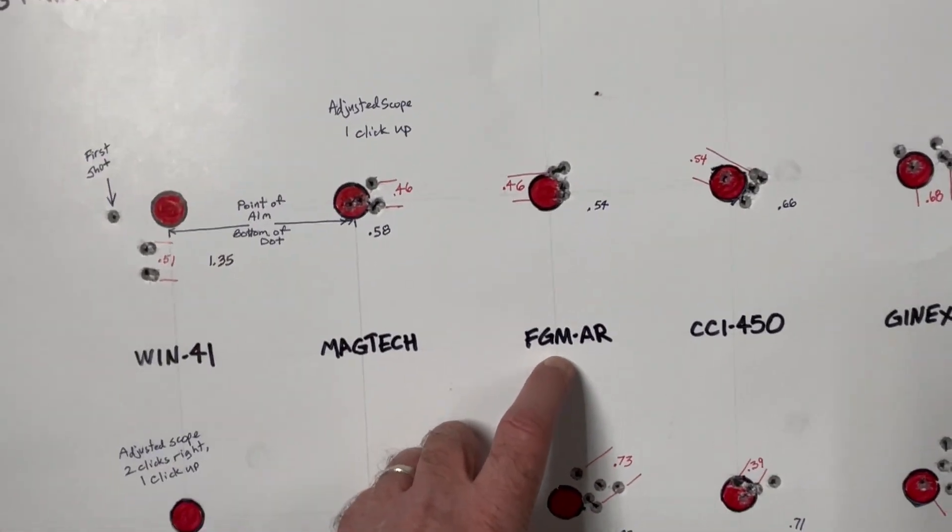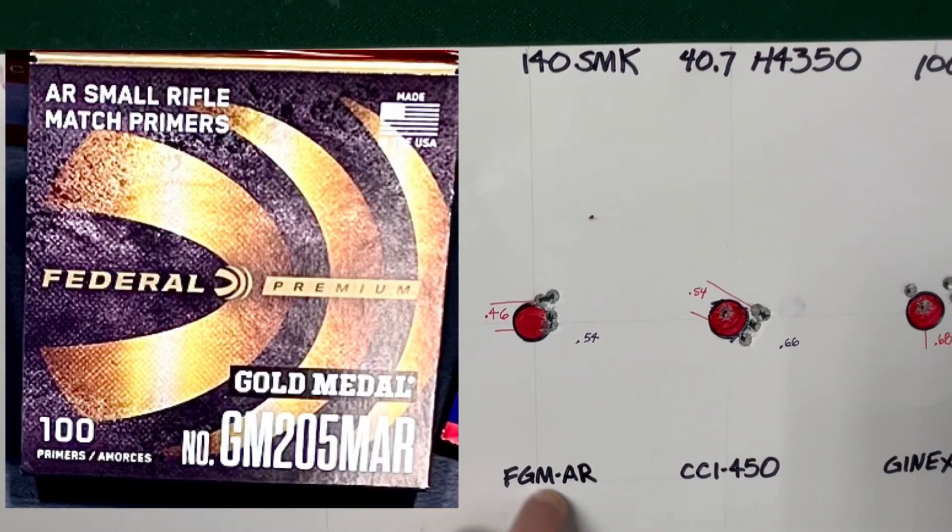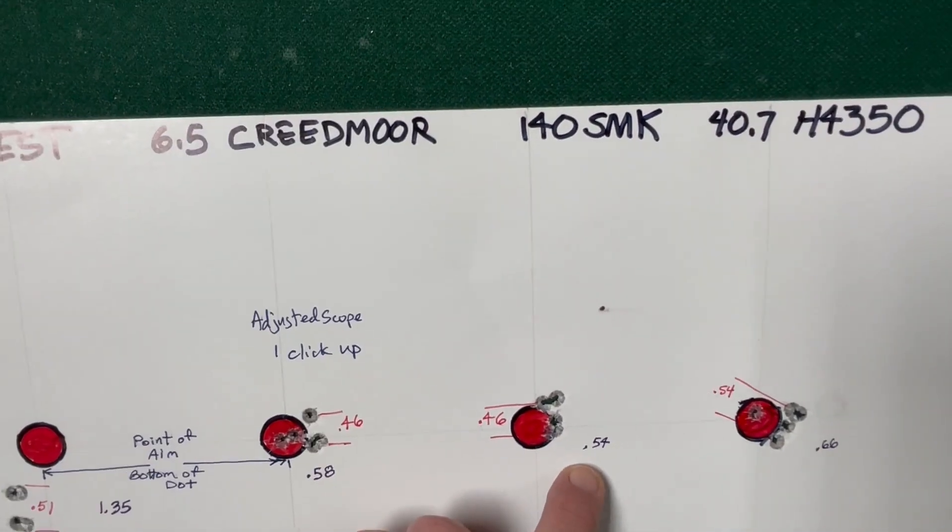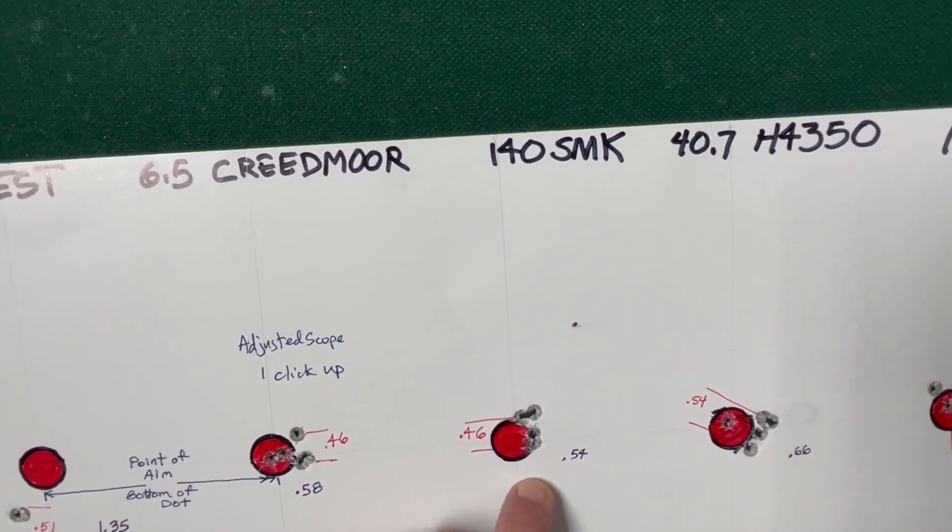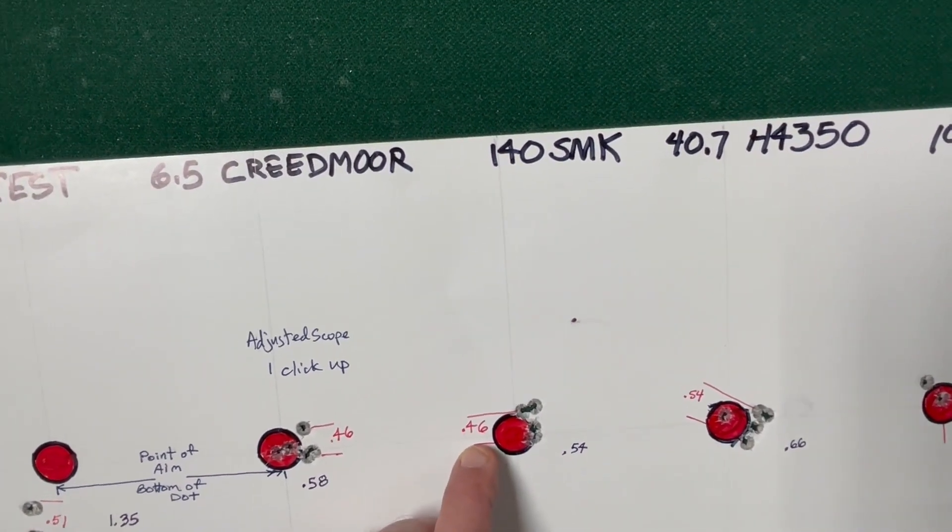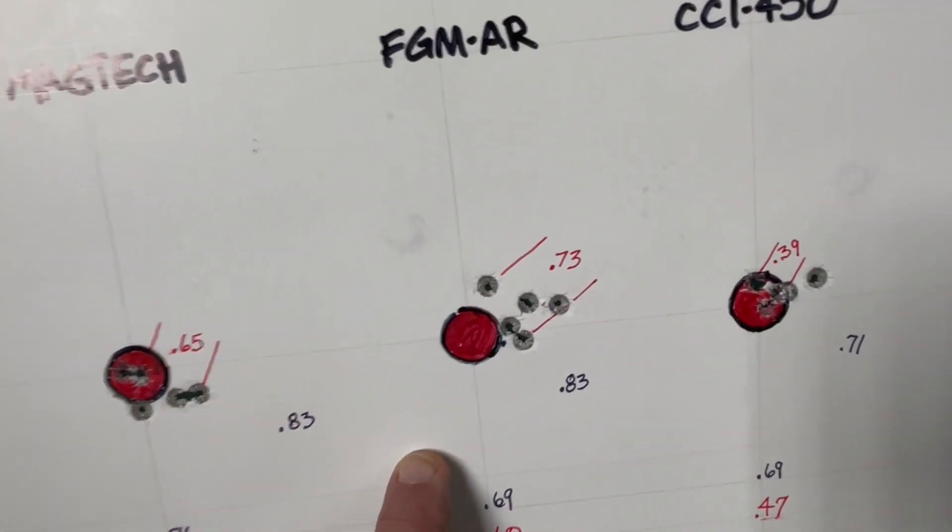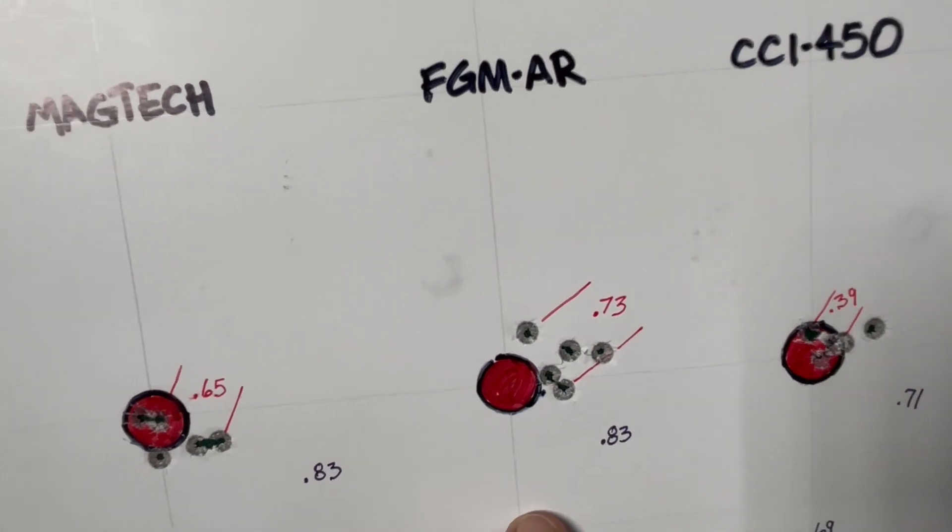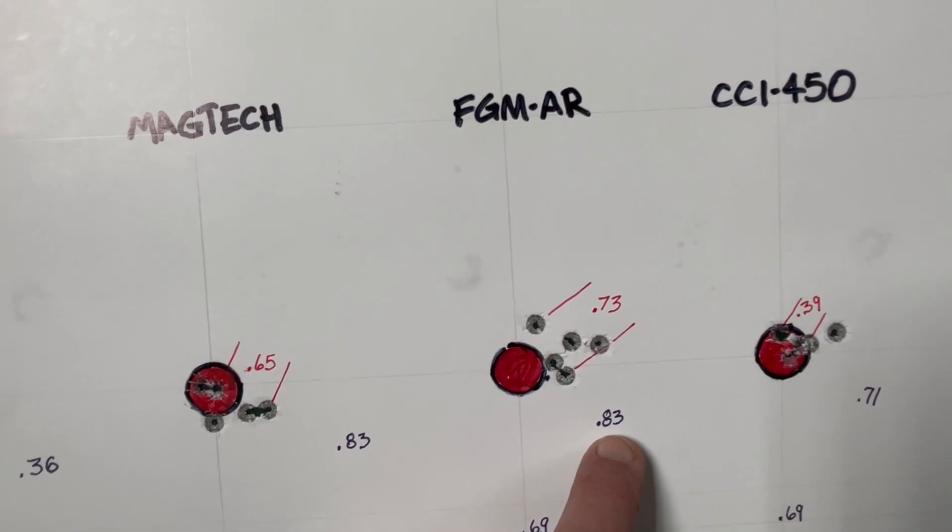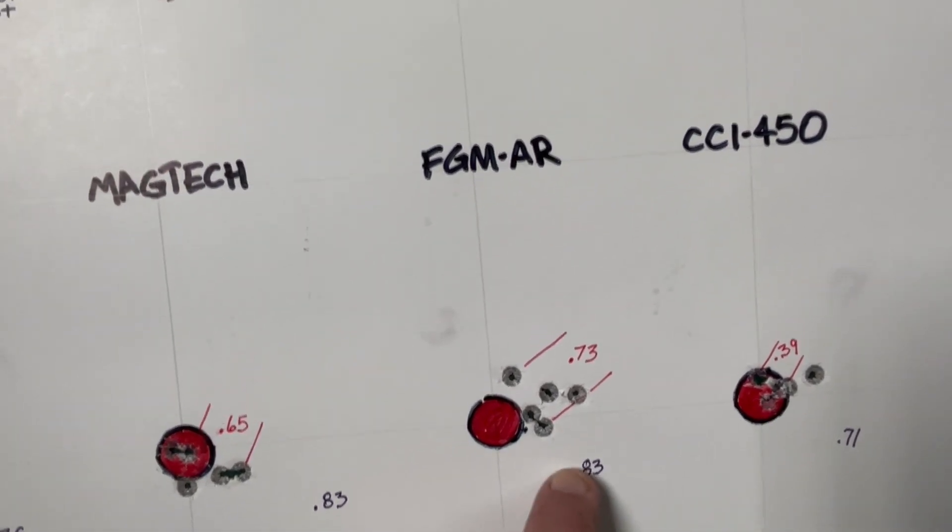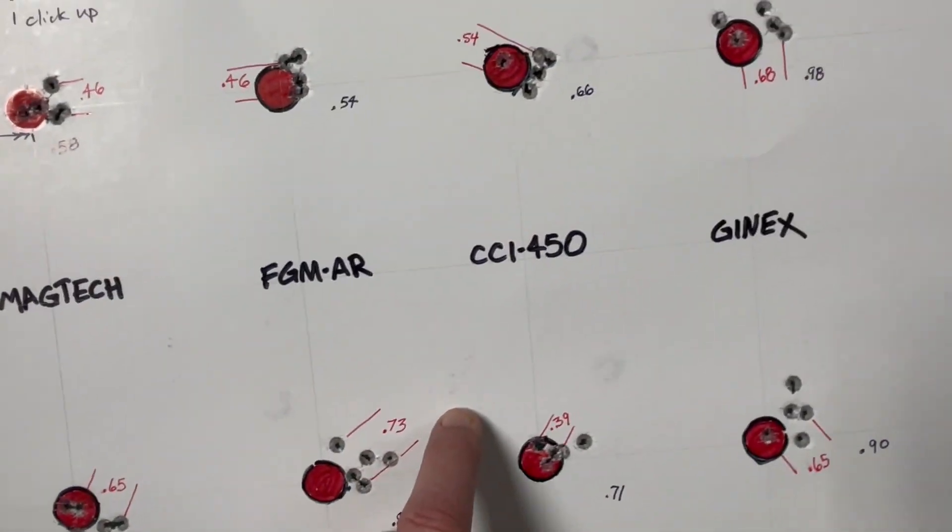Then on the Federal Gold Medal AR Match Primer, I had an extreme spread here of .54 inches, which I thought was excellent, and a best four out of five at .46. The second group spread out a little. I'm sure we can attribute this to shooter error. But I had an extreme spread of .83 and the best four out of five measured .73 inches.